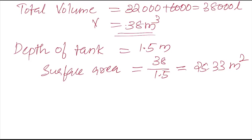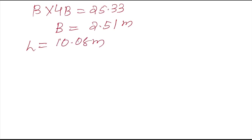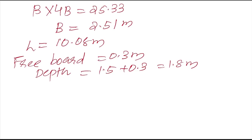Next, we need to fix a ratio for length and breadth, which is also not given. We assume L:B = 4:1, meaning length is 4 times the width. So area = B × 4B = 4B² = 25.33, giving B ≈ 2.51 meters, and length = 4 × 2.51 ≈ 10.08 meters. We also assume a freeboard of 0.3 meters, so total depth = 1.5 + 0.3 = 1.8 meters.